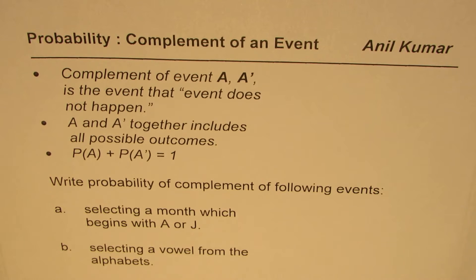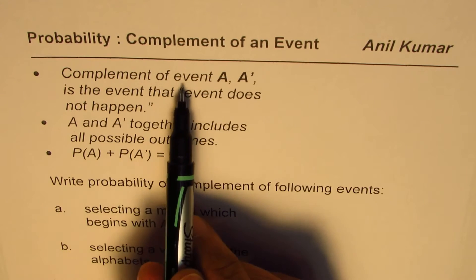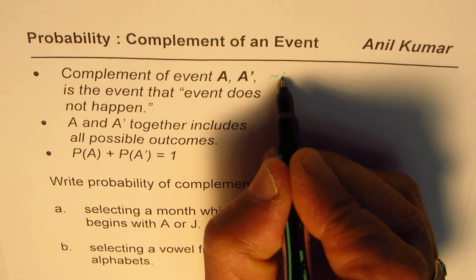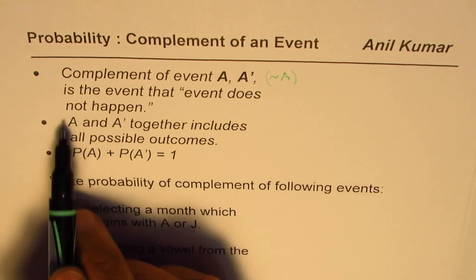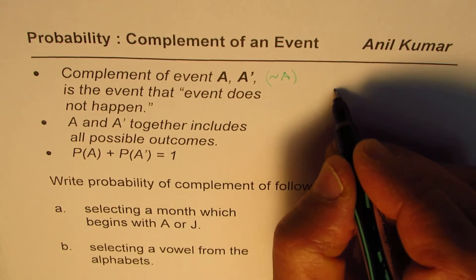I'm Anil Kumar. This video is for my subscriber who wants to understand what is complement of an event. We say complement of an event A is normally written as A prime. You could also write this as something like this. It is the event that event does not happen. That is what complement of an event is.